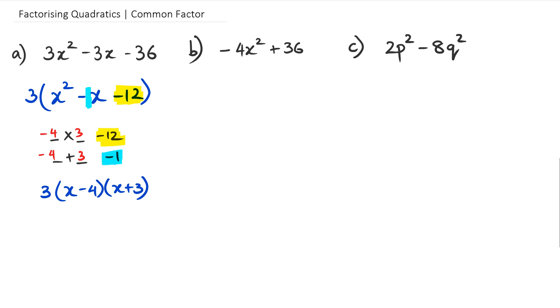Okay, so that's question A done. And now we're going to question B. What we have is we've got negative 4 in front of the x squared.